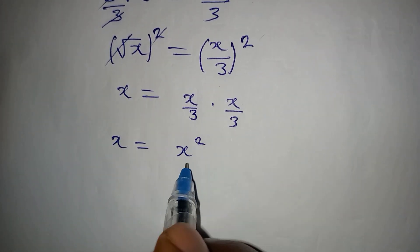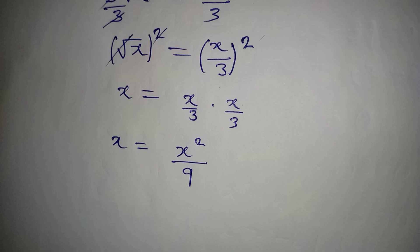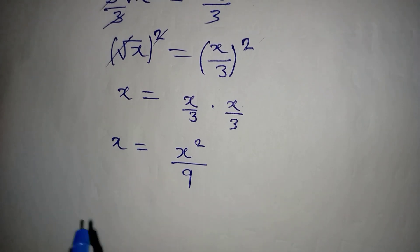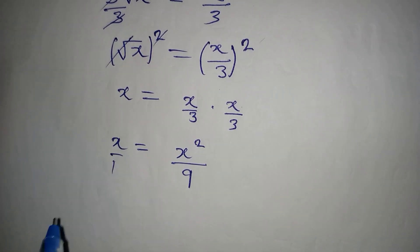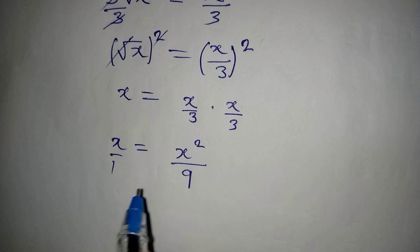Now let's cross multiply because this is over 1. So x² is equal to 9x.